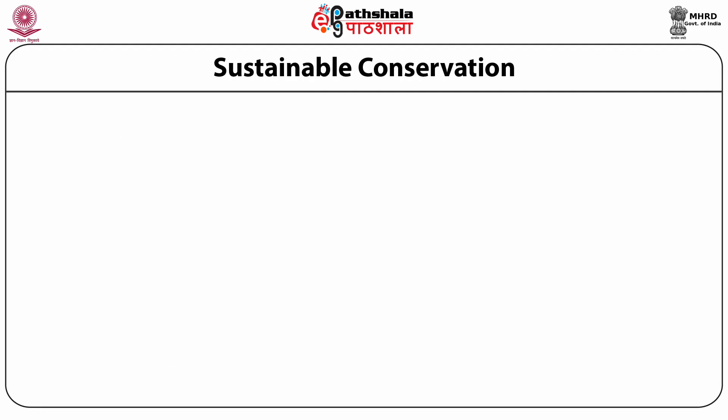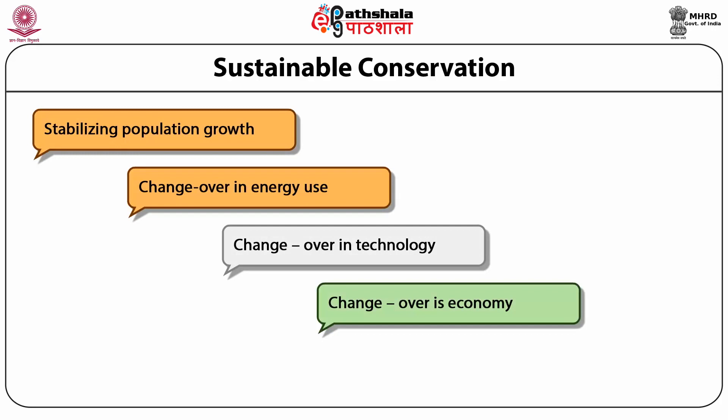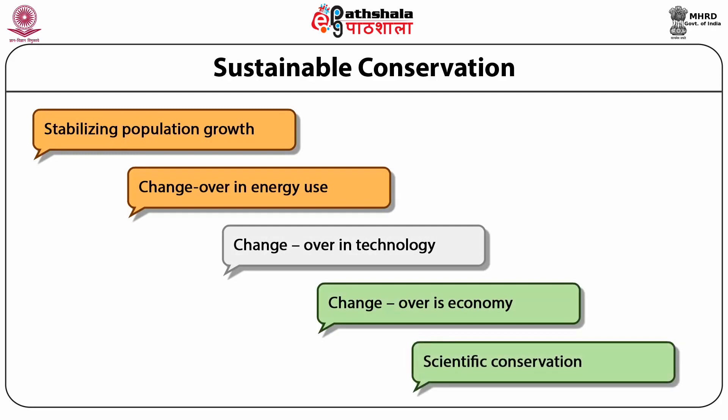What are sustainable conservation methods? We have discussed many conservation methods including ex-situ and in-situ conservation methods, which all play a direct role along with sustainable conservation. Sustainable conservation is for conserving natural resources and achieving optimum utilization of natural resources, which mainly consists of stabilizing population growth, changeover in energy use, changeover in technology, changeover in economy and scientific conservation. Stabilizing population growth involves a very critical factor in over-utilizing natural resources, and energy resources, technology and economy also play an important role in sustainable conservation.